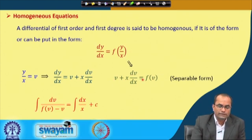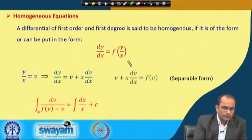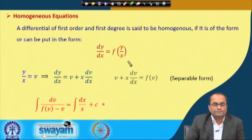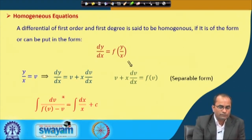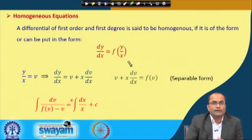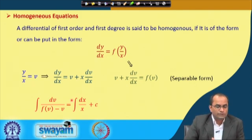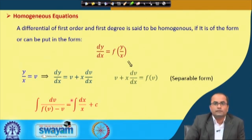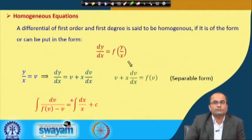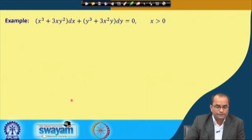The separable form is ∫dv / (φ(v) − v) = ∫dx/x + c. After obtaining the solution in v, we substitute back v = y/x to get the solution in terms of x and y.